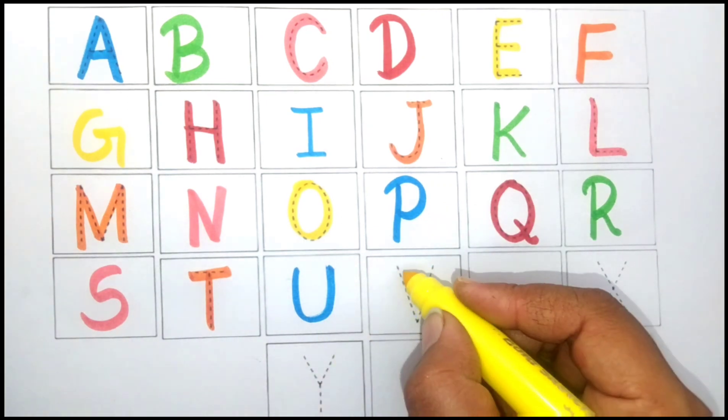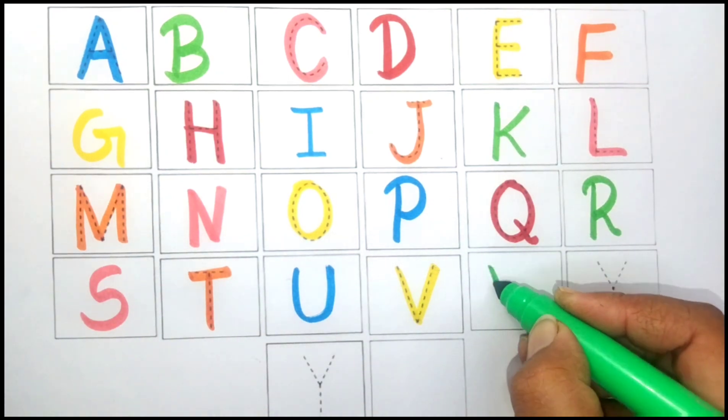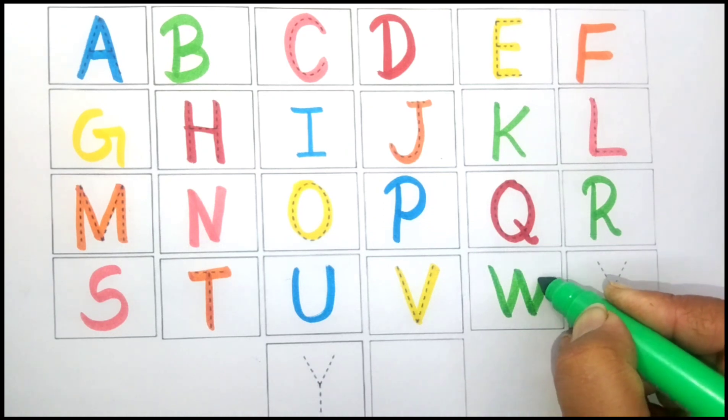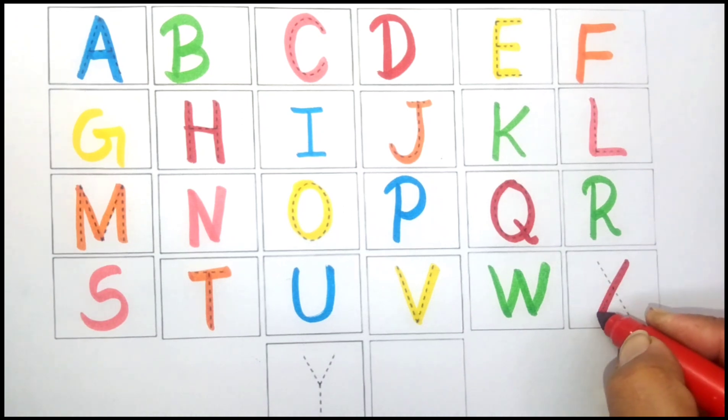Yellow color V. V for van. Green color W. W for water. Red color X. X for x-ray.